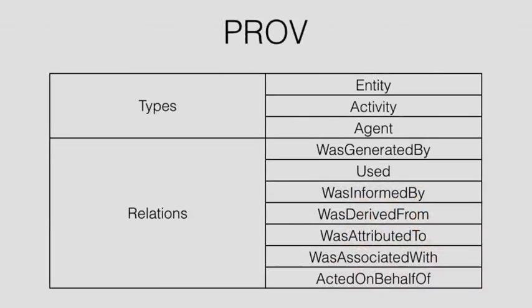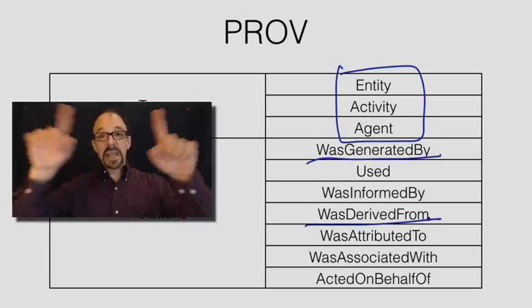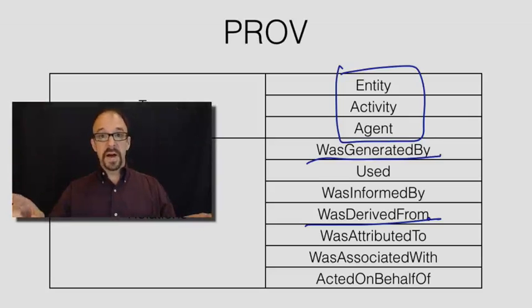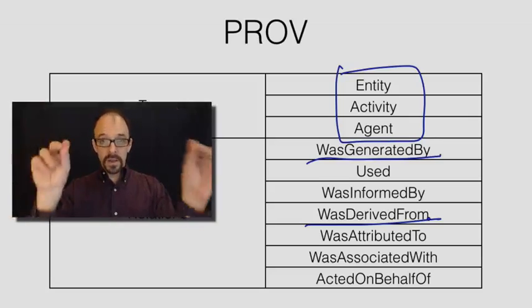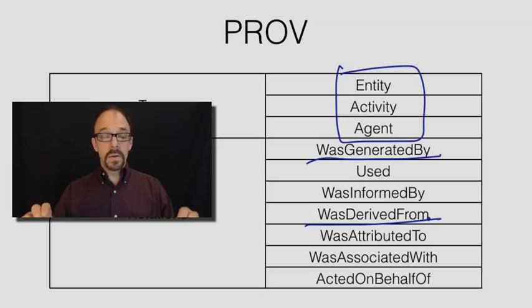PROV also provides a map of these core structures — entity, activity, and agent — and the relationships among them, defining a set of relationships between entities in the universe of provenance.